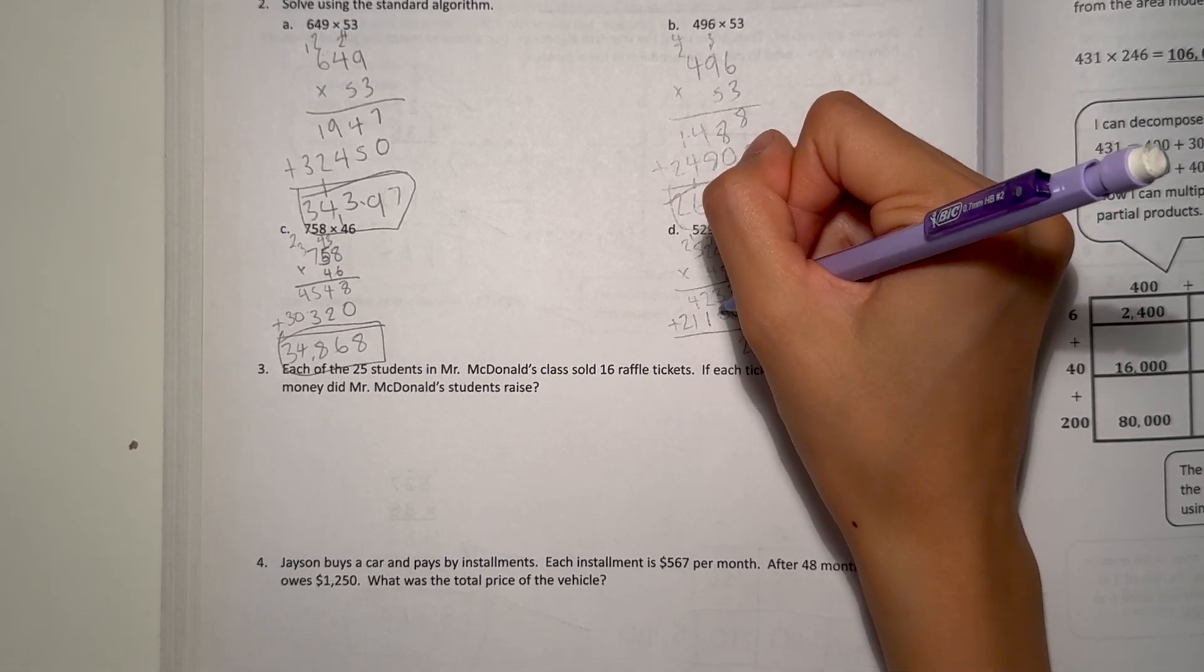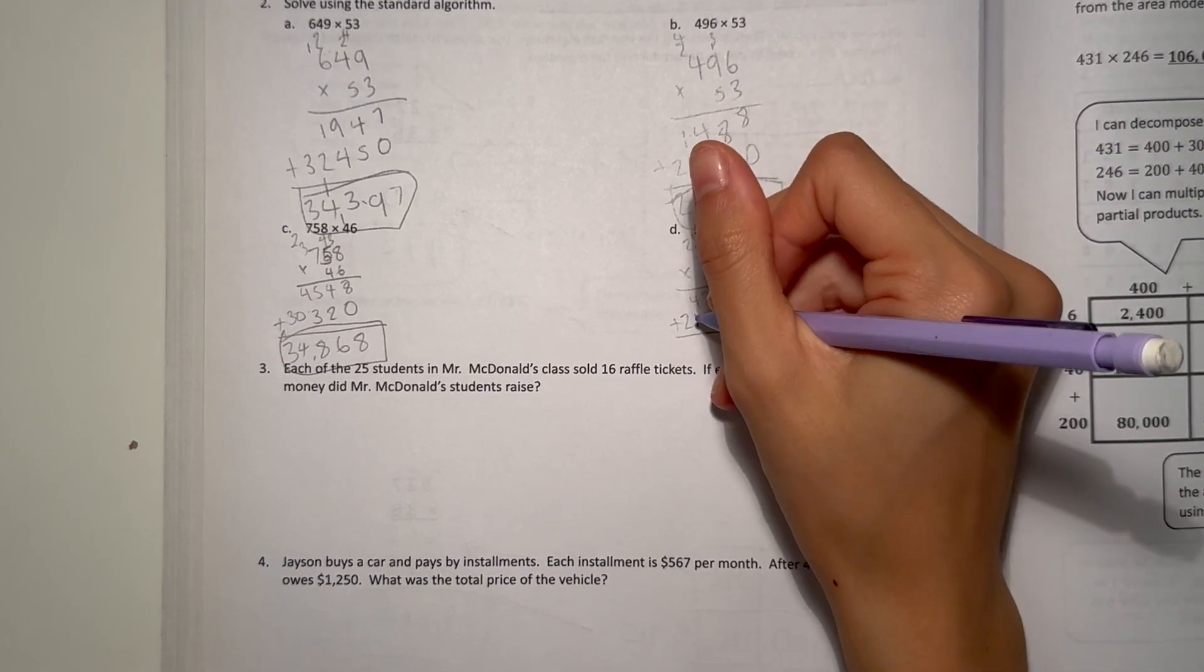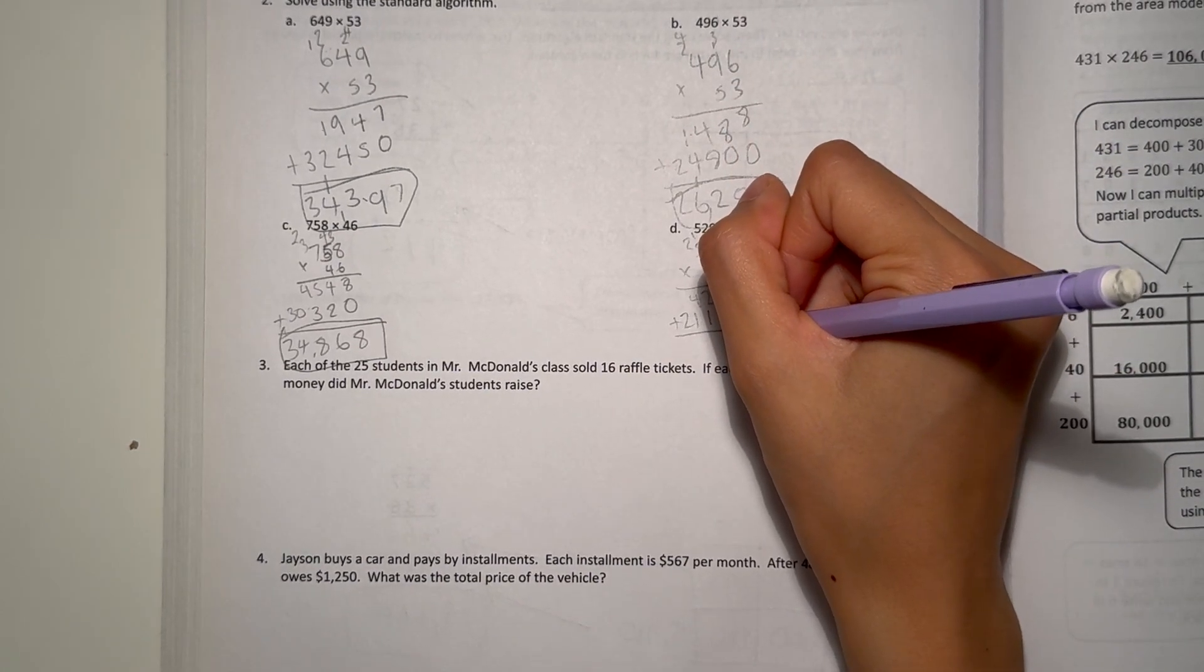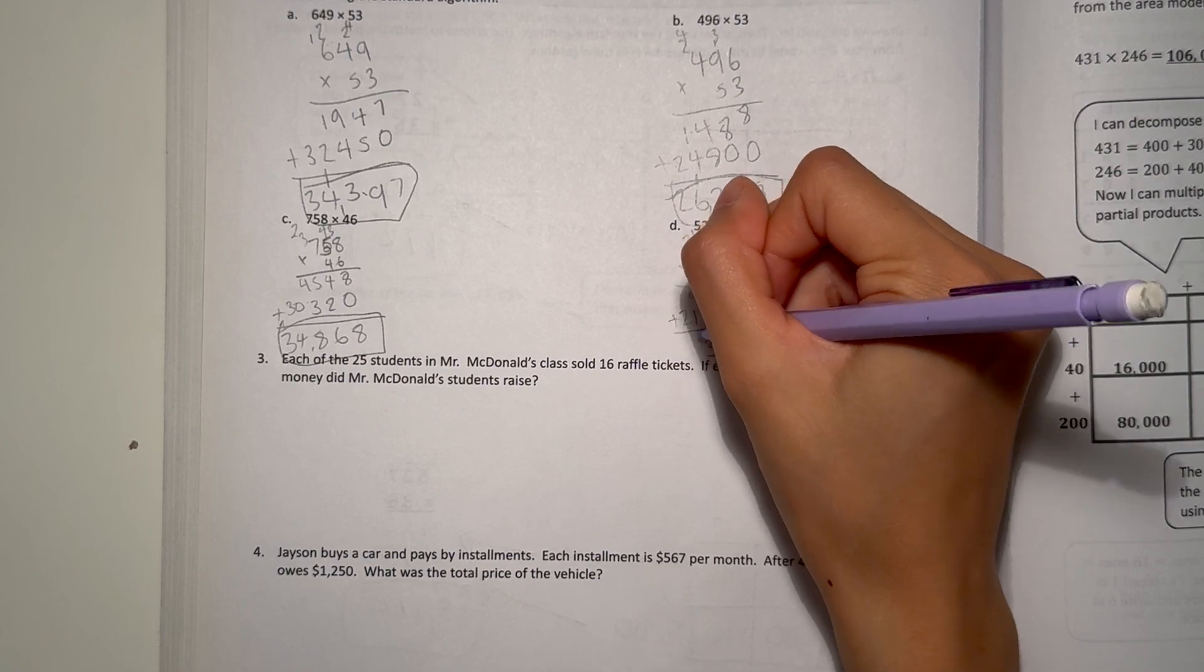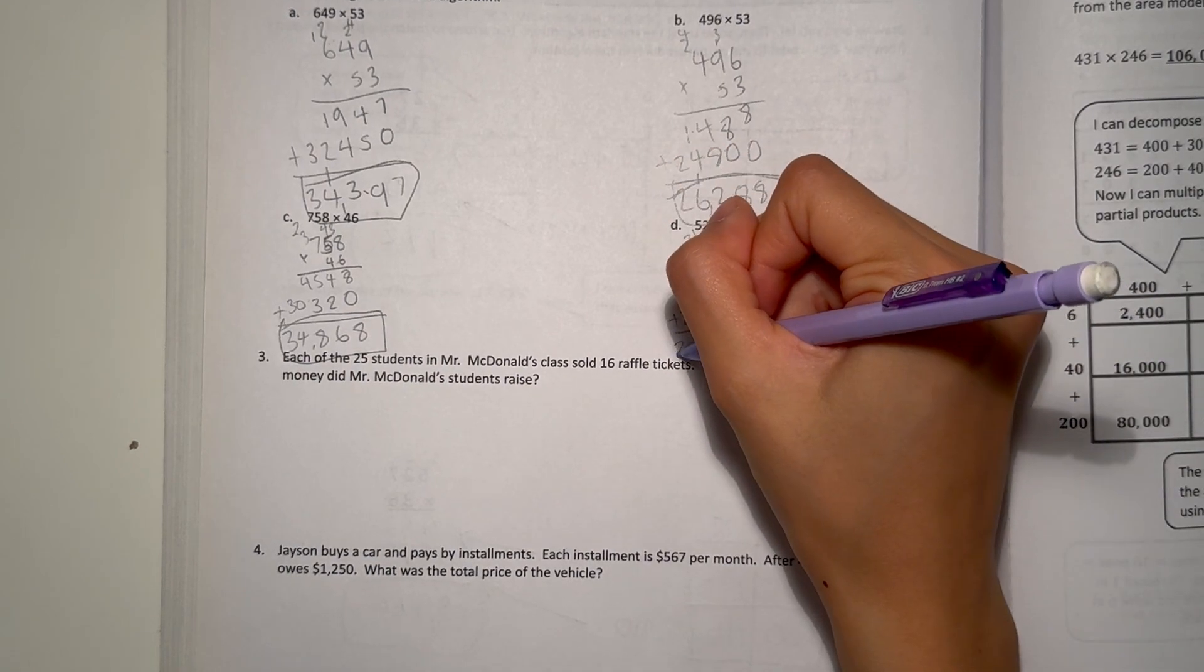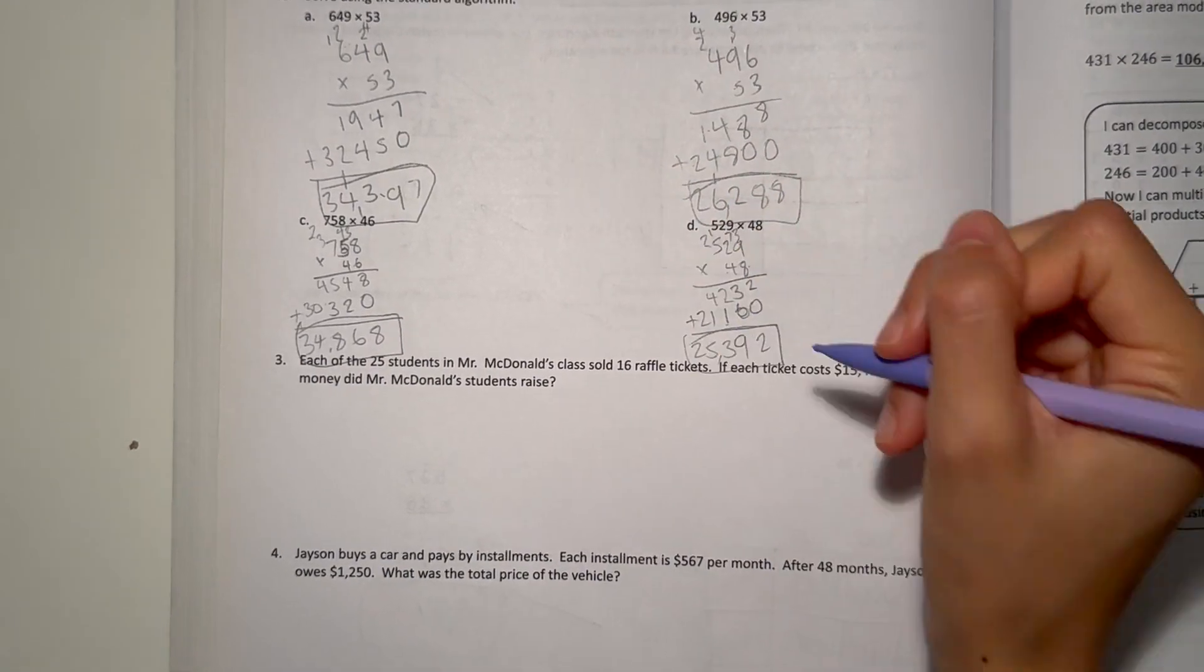So let's add 2 plus 0 is 2. 3 plus 6 is 9. 2 plus 1 is 3. That's 5 and that's 2. So 25,392.